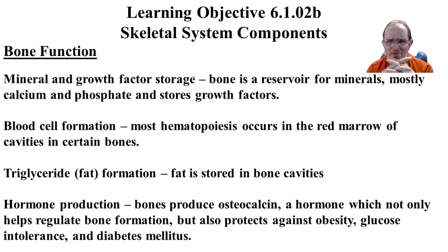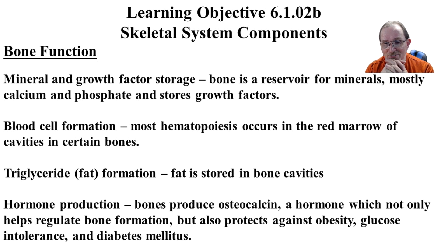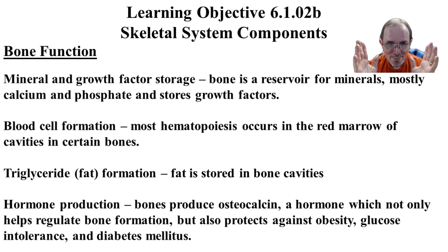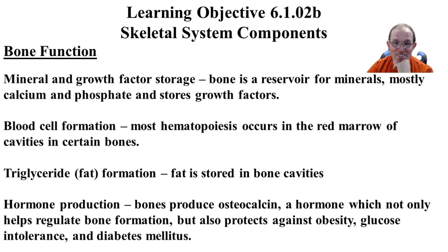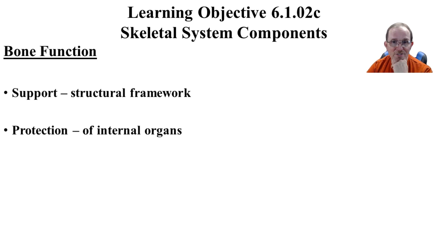Bones also produce a hormone called osteocalcin. I've been researching it for the last couple of years — they've discovered it but haven't connected all the dots. It's going to have something to do with obesity and diabetes. Every semester I look up the latest on osteocalcin to see what they've found out.